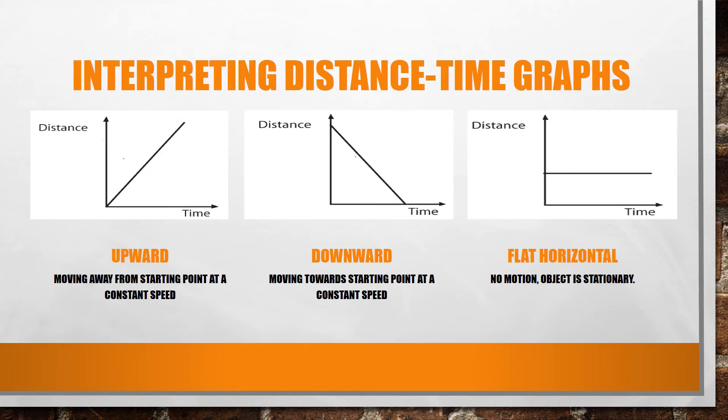Most distance-time graphs that you will see have three main types of lines. There is a diagonal upward line that shows the object moving away from its starting point at a constant speed. Now, constant speed means that this object isn't slowing down or speeding up. It's staying the same. We have the diagonal downward line that shows the object moving towards its starting point, again at a constant speed. We also have a flat horizontal line that tells us that the object is not moving. We can see this because the distance does not change as time goes on.